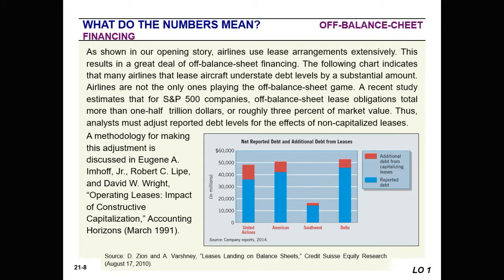Quite often, airlines use lease arrangements, and this results in what's called off-balance sheet financing. Airlines that lease aircraft understate their debt levels by a substantial amount. But airlines are not the only ones who engage in this. Recent studies of S&P 500 companies show that off-balance sheet lease obligations total more than $1.5 trillion, or about 3% of the market value. So when analysts are looking at these companies, they have to readjust the reported debt levels for the effects of these non-capitalized leases.